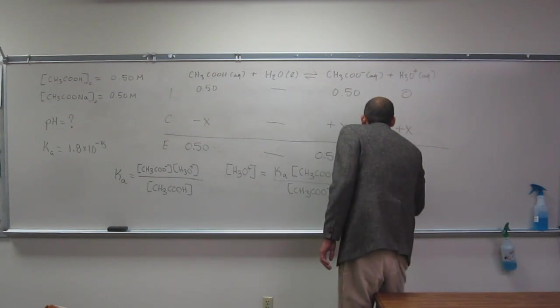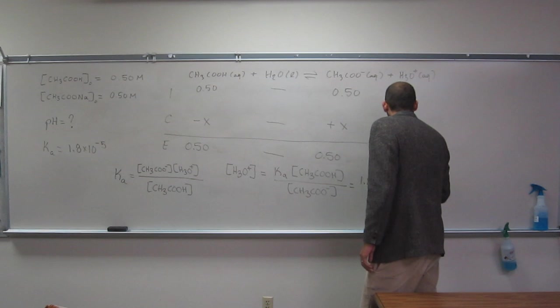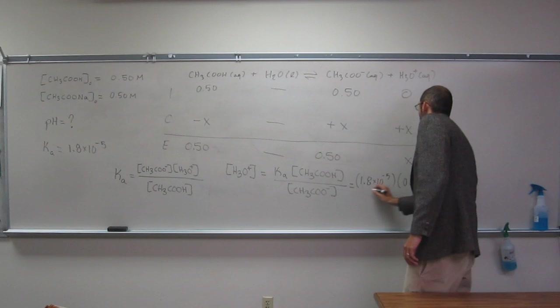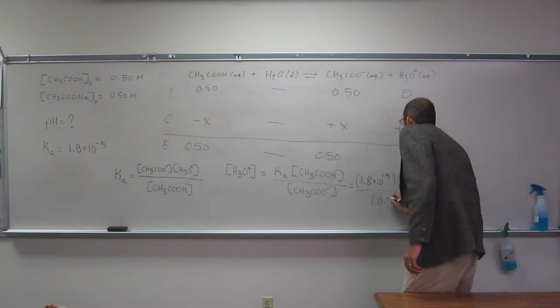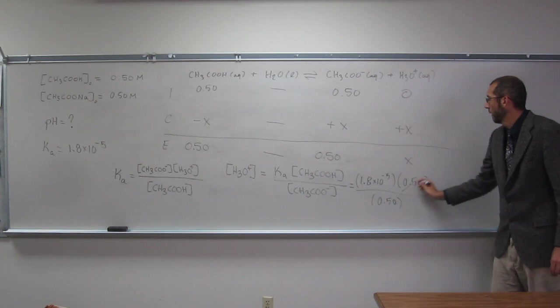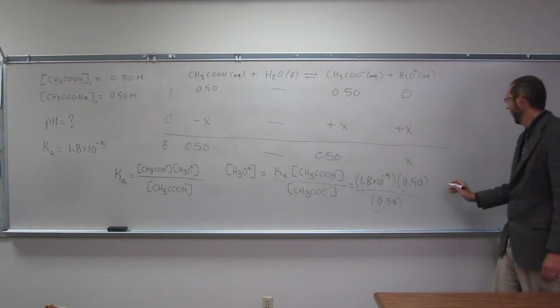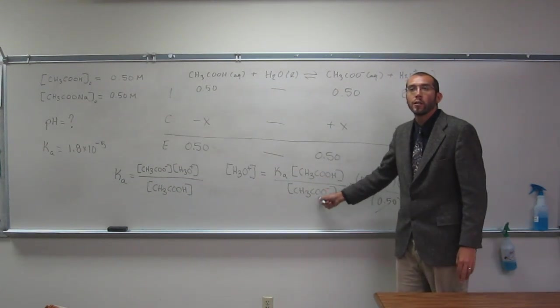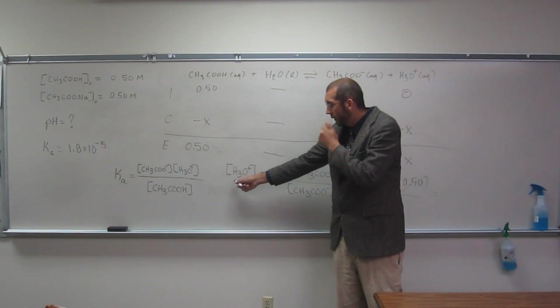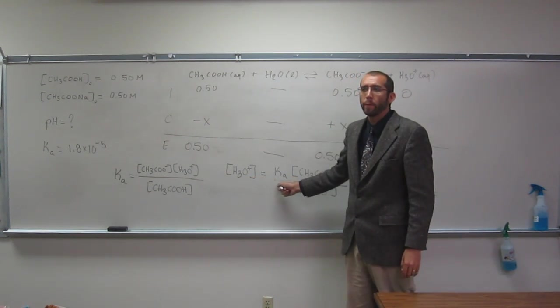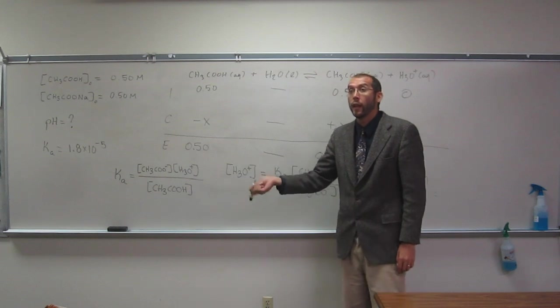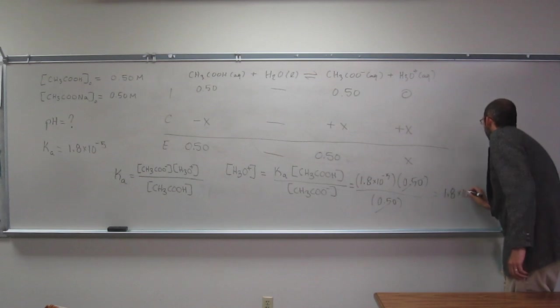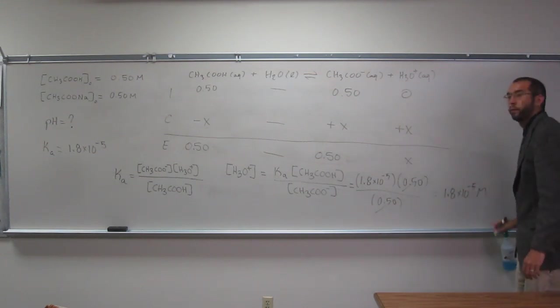So 1.8 times 10 to the negative 5 times 0.50 divided by 0.50. Well, this cancels with that, right? Everybody sees that? So when you've got these two concentrations equivalent, your hydronium concentration equals your Ka, or your pH equals your pKa. So in this case, it would be 1.8 times 10 to the negative 5 molar.